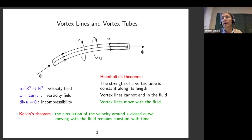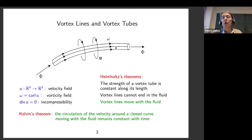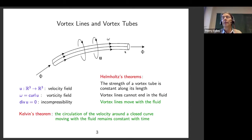Some properties of vortex lines are established in Helmholtz's paper. For instance, Helmholtz observed that vortex lines cannot have any endpoint in the fluid — they can always be extended to infinity, to the boundary of the domain, or form closed curves, but they cannot have endpoints. Helmholtz also considered what he called the vortex tube — a little tube made of vortex lines. There is a very important quantity: the flux of the vorticity vector through a cross section of the tube, which does not depend on the choice of cross section by Stokes' theorem. This quantity measures the strength of the vortex tube.